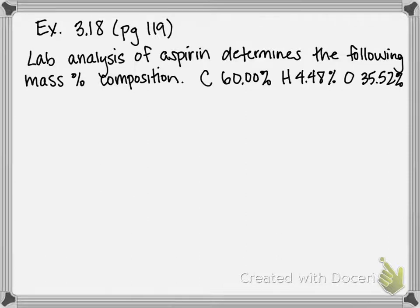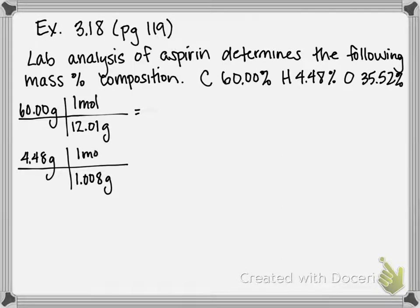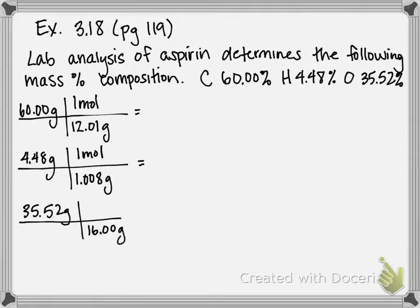Like our last problem, the first step in solving these types of problems is to convert gram amounts to mole amounts. If we have 60 grams of carbon, we divide by its molar mass, 12.01 grams per mole. Hydrogen would be 4.48 grams divided by 1.008 grams per mole. And oxygen would be 35.52 grams divided by its molar mass, 16 grams per mole.